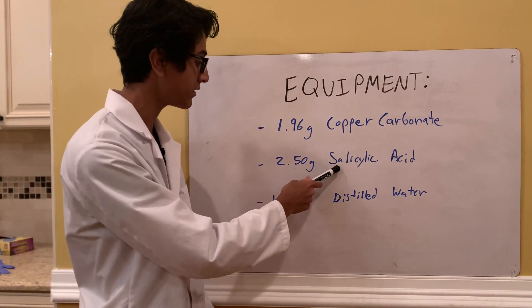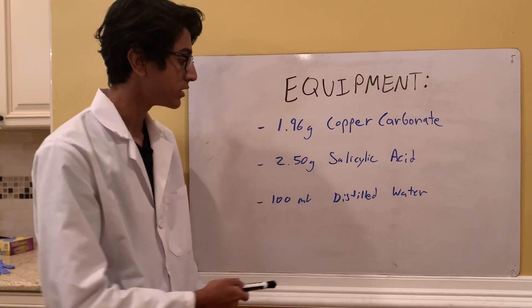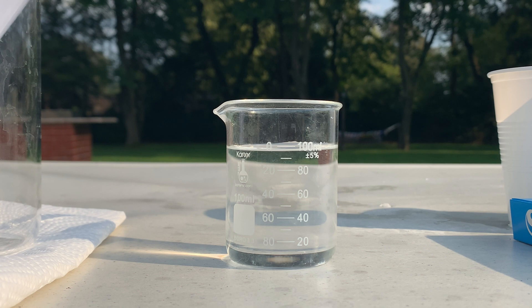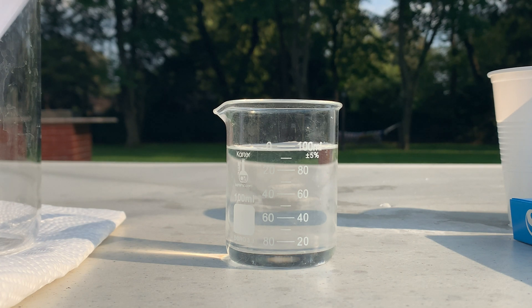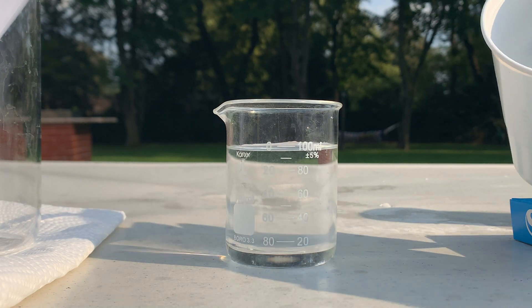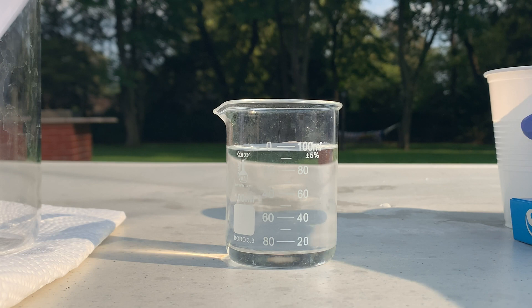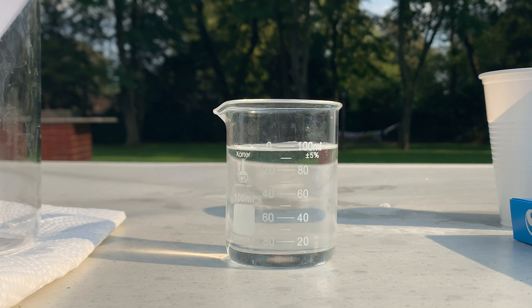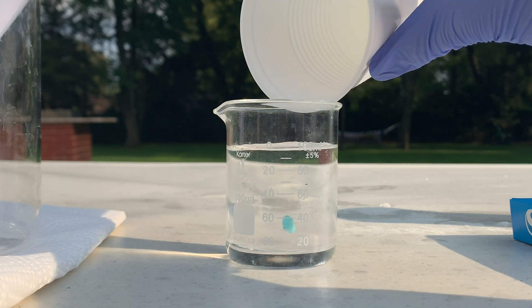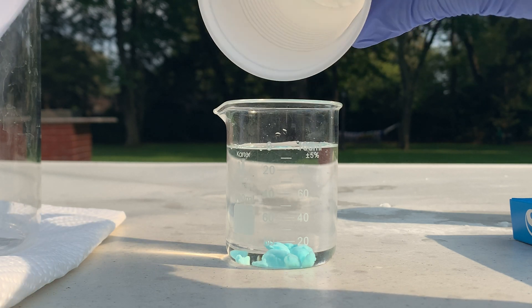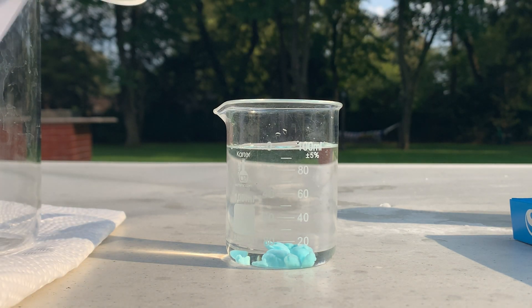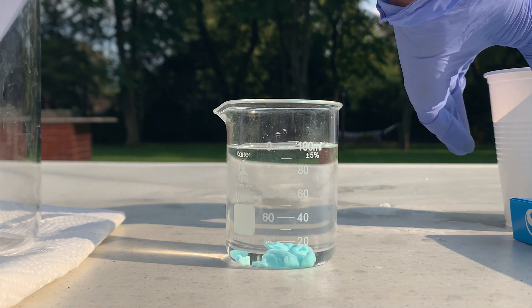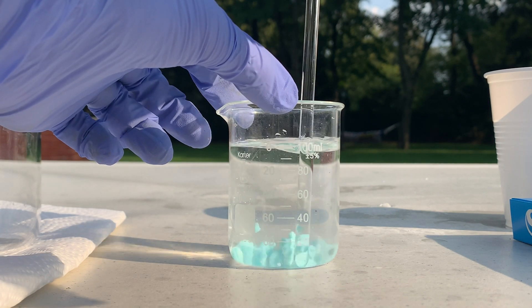We also need 2.5 grams of salicylic acid and 100 milliliters of distilled water, which should preferably be warm. I've got my very small beaker out because we're doing this on a small scale since I don't have much copper carbonate to spare. I warmed the water up a bit in the microwave, and I'm going to start by adding the copper carbonate to the beaker. All the copper carbonate has been added and I'm going to mix it around a bit.